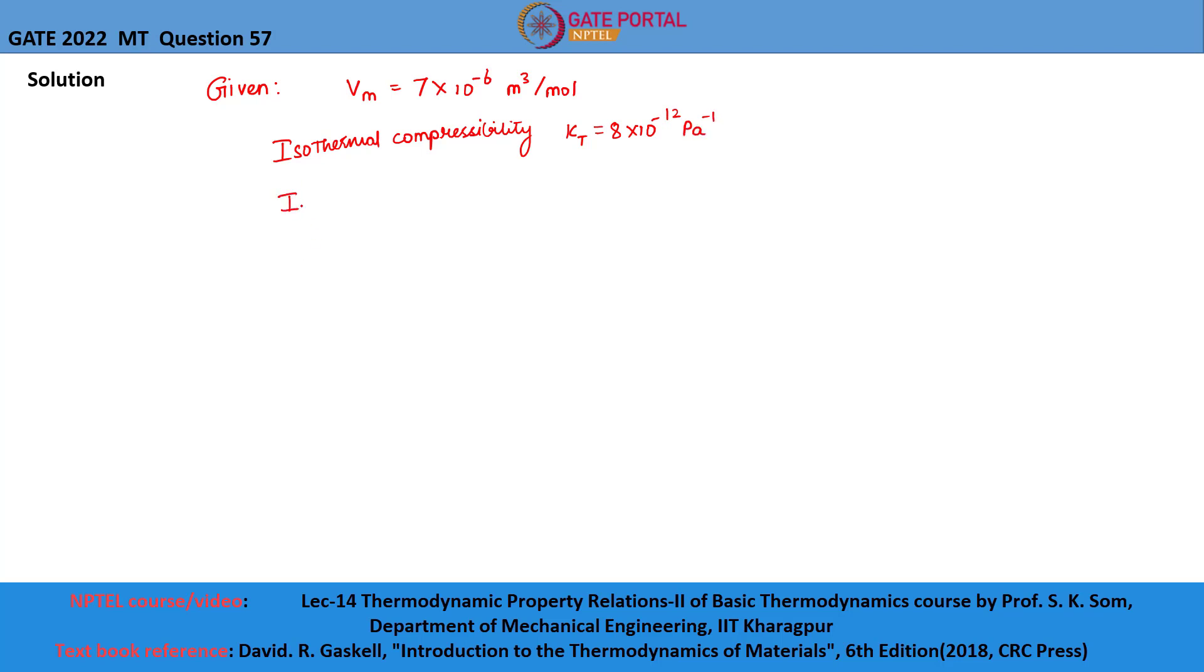And isobaric expansivity, let us take it as alpha P, which is equal to 6 into 10 power minus 5 Kelvin inverse. And the temperature T is 500 Kelvin, and the value of gas constant R is equal to 8.314 joules per mole per Kelvin.